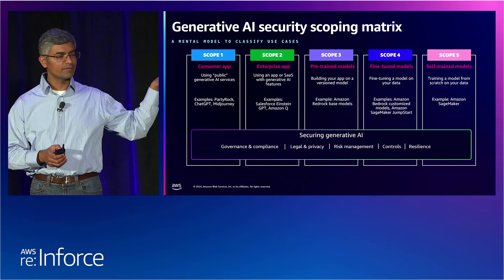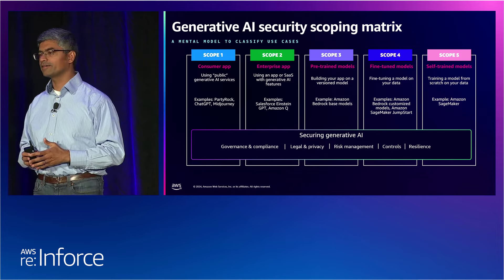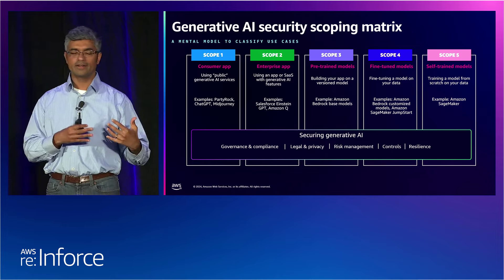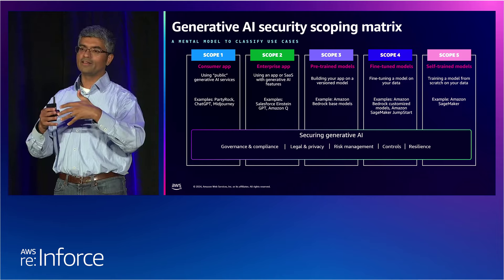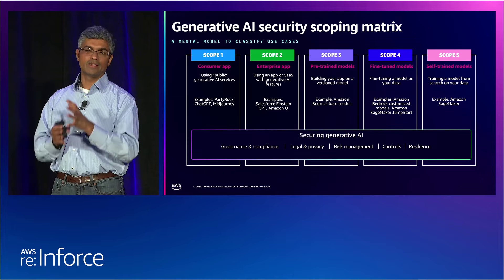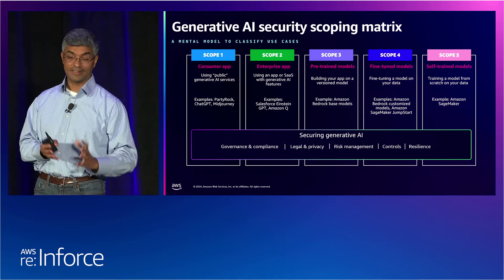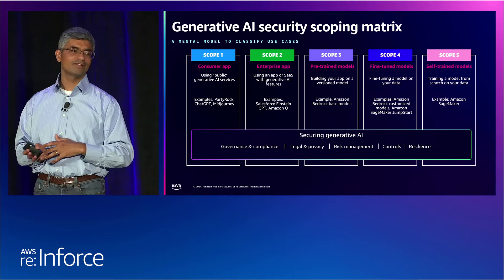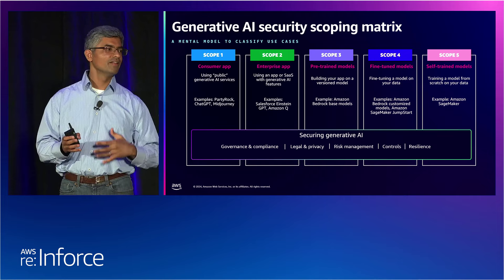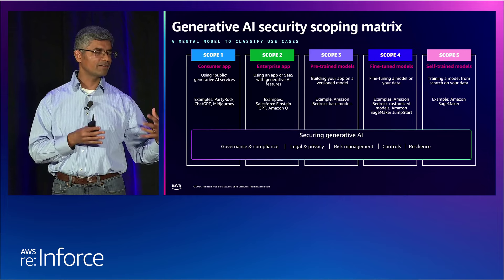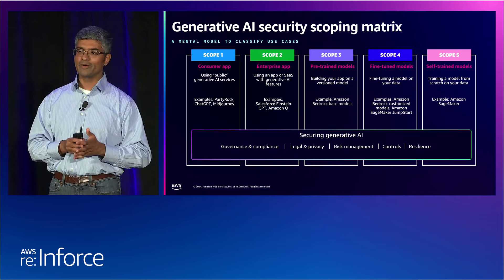Scope four is actually the first time your data as a customer makes its way in some form into the model weights. That has some implications for data privacy, as we'll see in a minute — an important impact of using something like scope four.